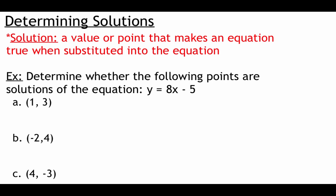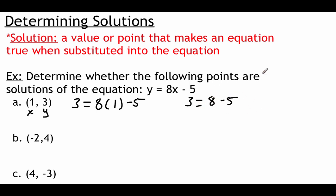Down below we're given the equation y equals 8x minus 5, and I'm asking you to check three different points. First we're going to check the point (1, 3). Remember, the first number is an x value and the second number is a y value. We substitute: 3 equals 8 times 1 minus 5. That gives us 3 equals 8 minus 5, which is 3 equals 3. That's true, so the point (1, 3) is a solution.